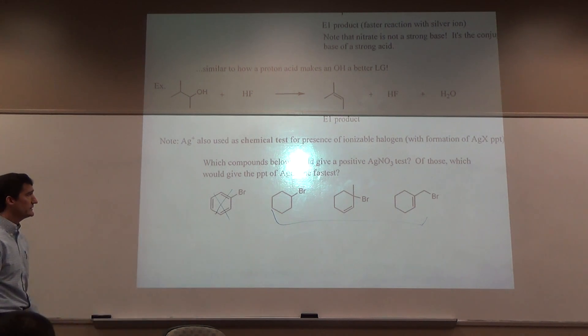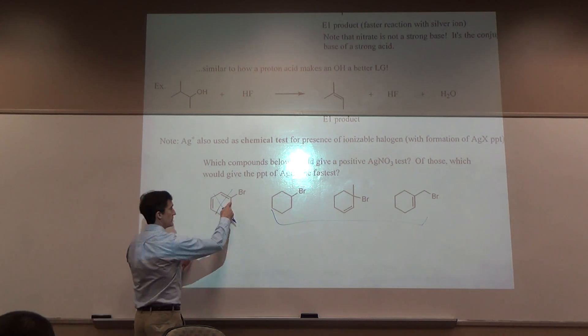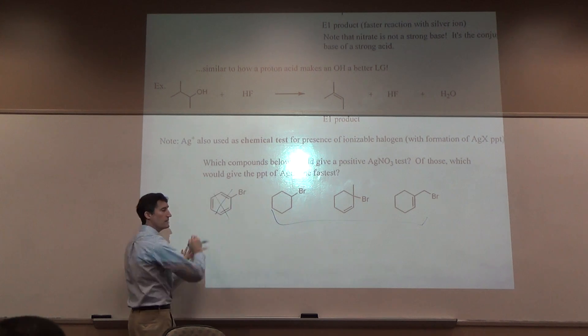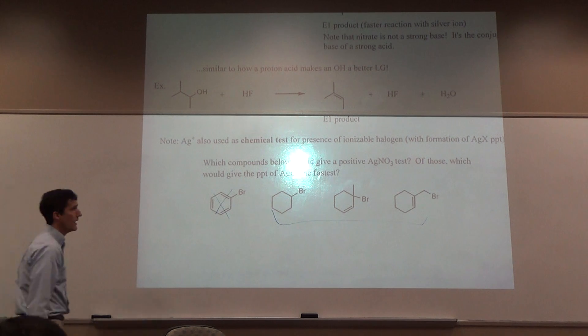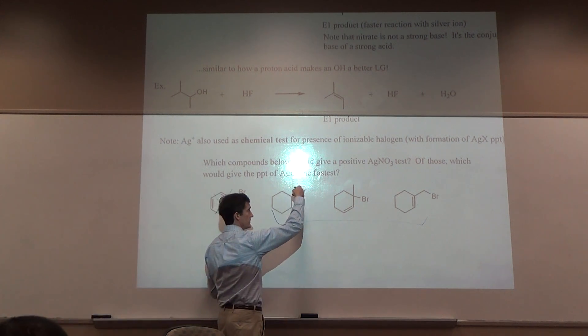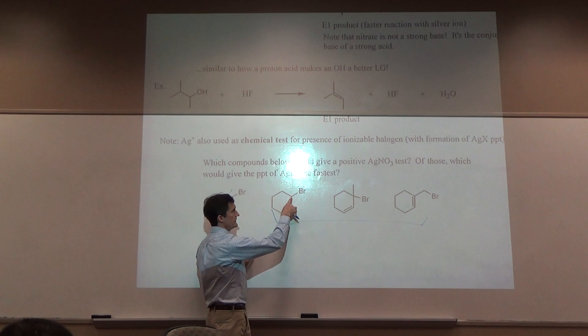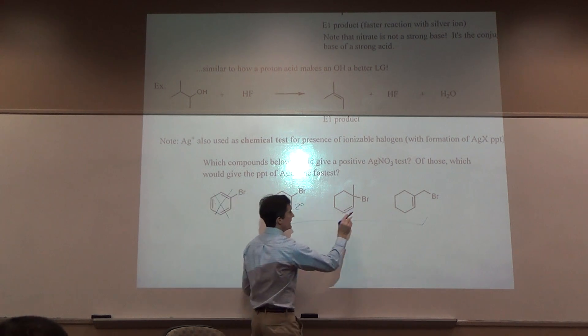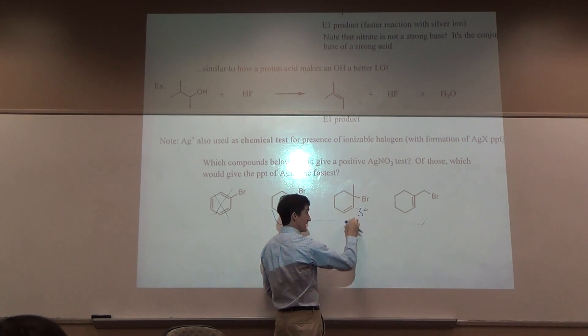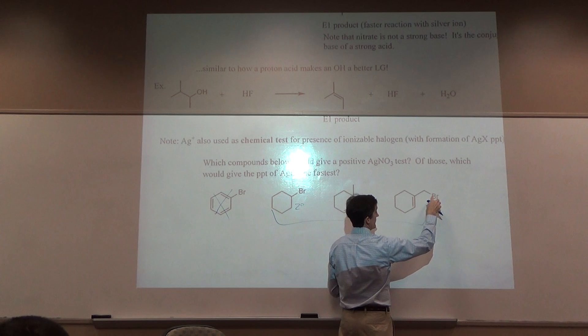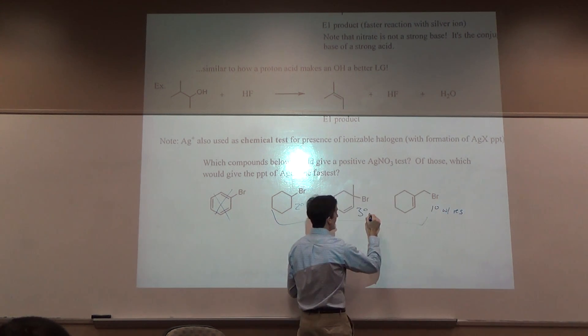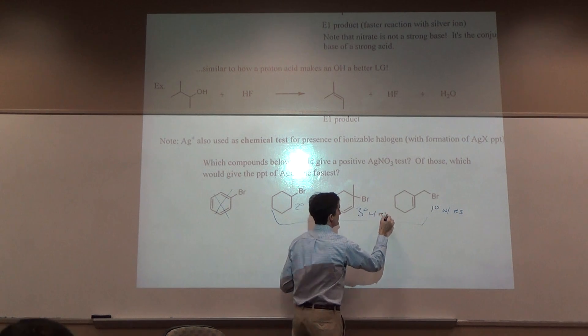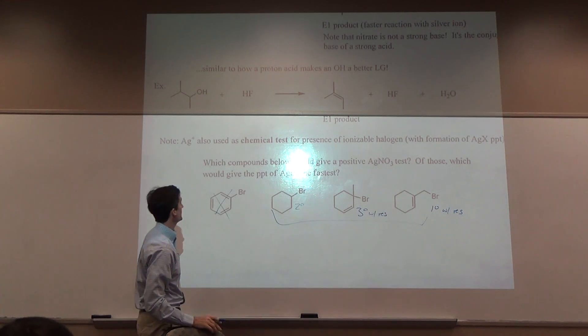You can treat bromobenzene with silver nitrate. It's not going to form silver bromide. That bromine is not ionizable. All these other ones, though, we can envision the bromine ionizing off making a secondary carbocation. That would be tertiary with resonance. This would be primary with resonance in terms of cations. All these are theoretically possible.